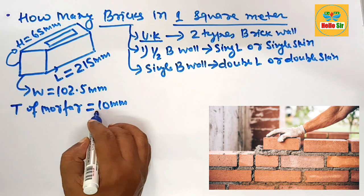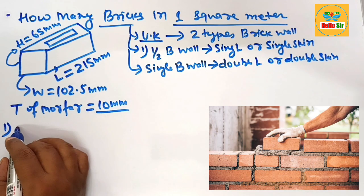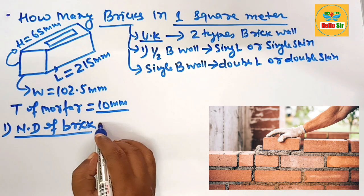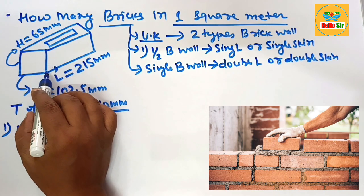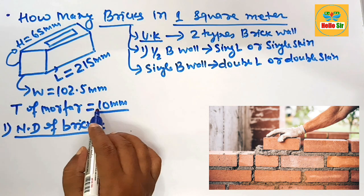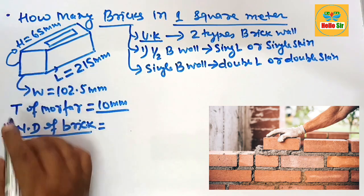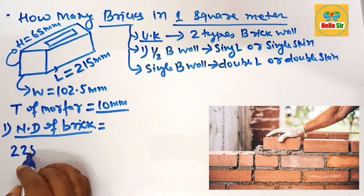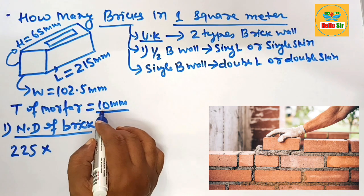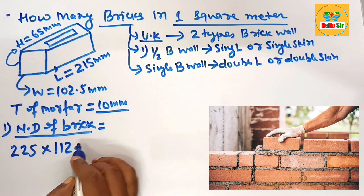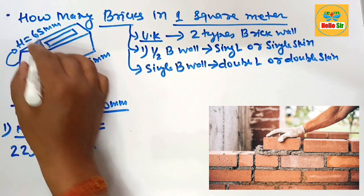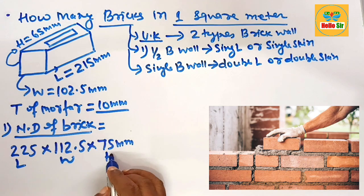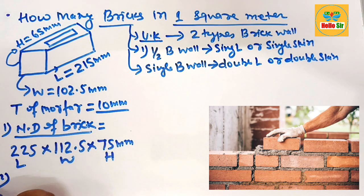Now calculate the nominal dimensions of a brick. The nominal dimension means the actual dimension of the brick plus the thickness of the mortar joint — that is, adding 10 mm to each figure. So the nominal length is 225 mm, the nominal width is 112.5 mm, and the nominal height is 75 mm.